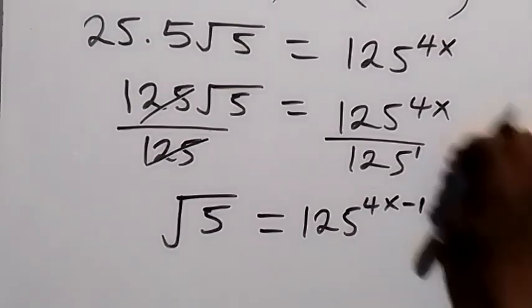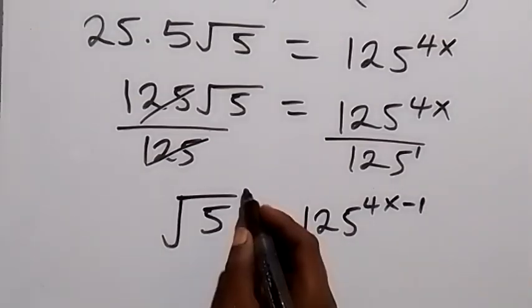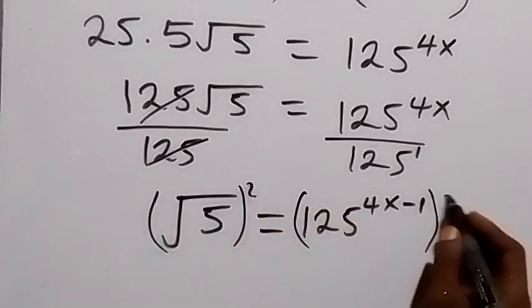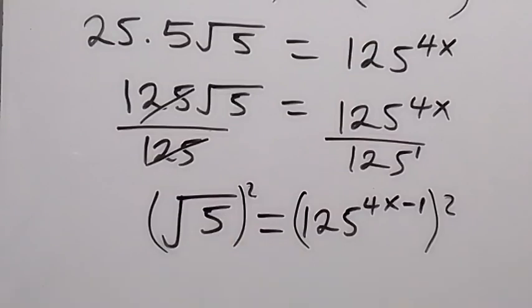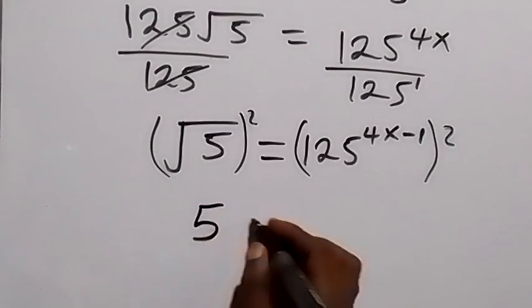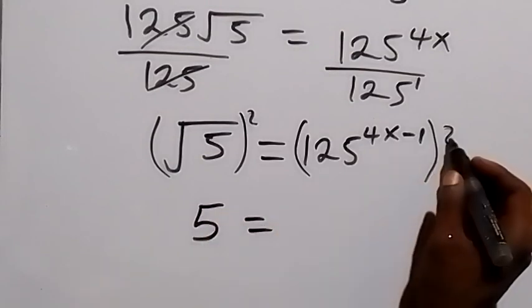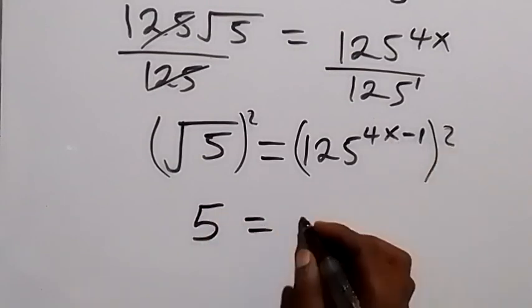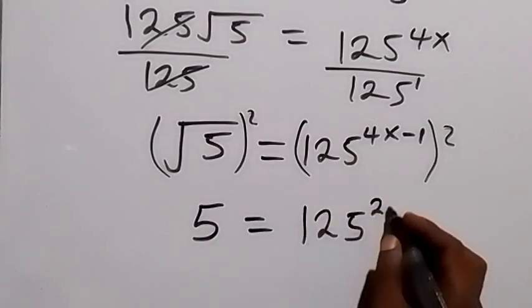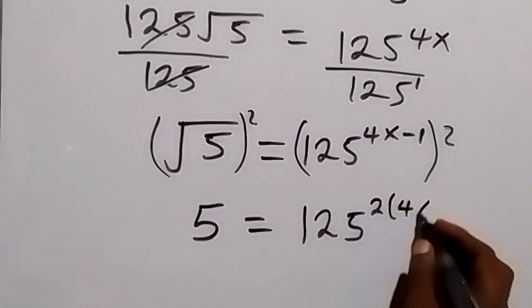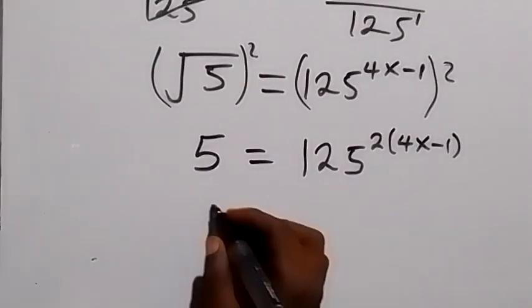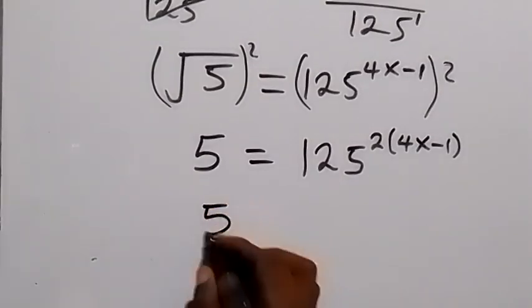In the next step, let's take the square on both sides again. We square this side; the square cancels the square root and we have 5 left. So we have 5 equals to 125 raised to power 2 multiplied by 4x minus 1.